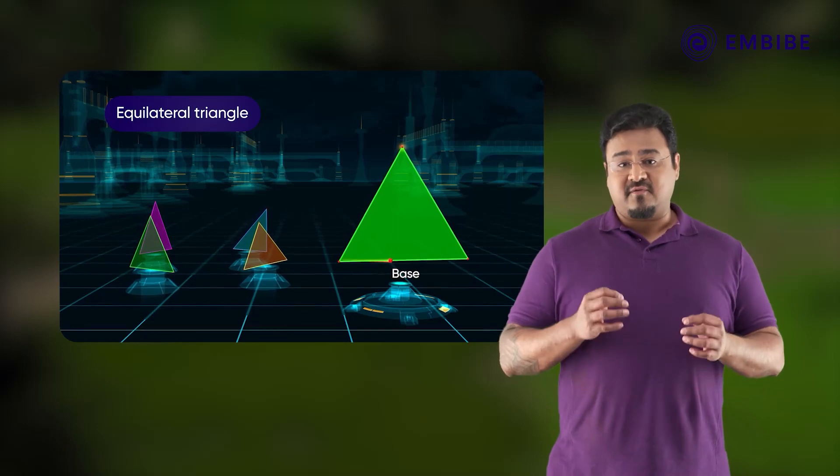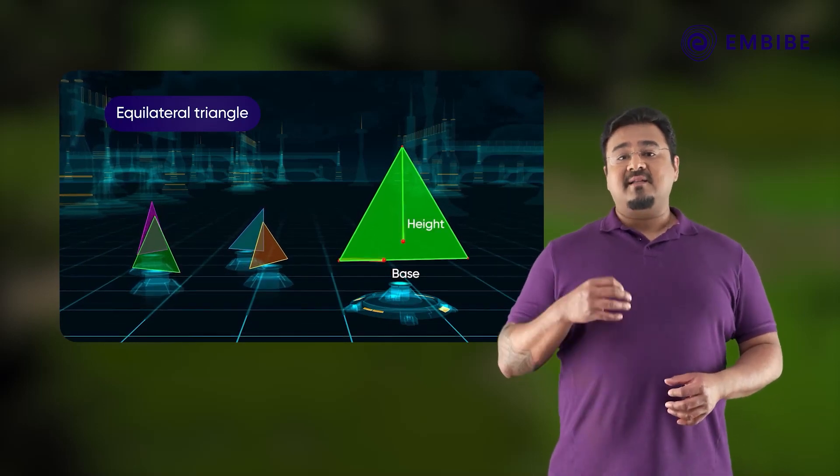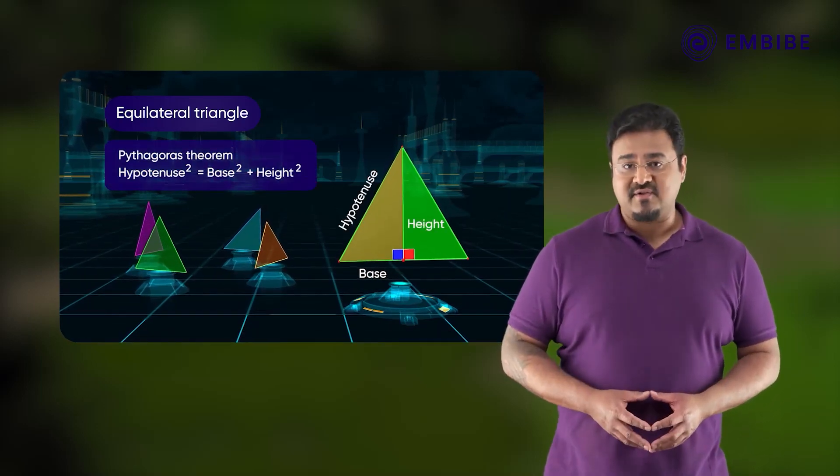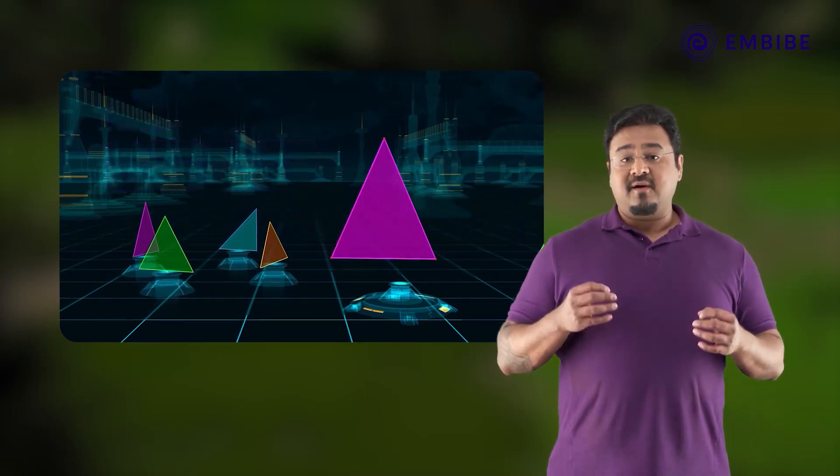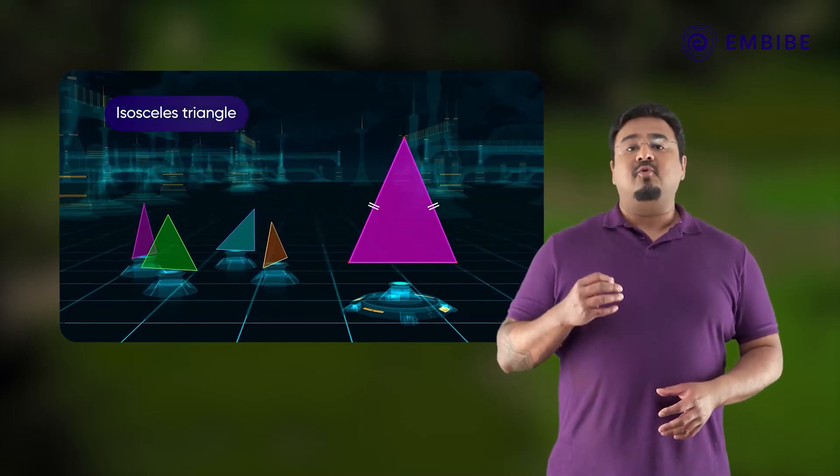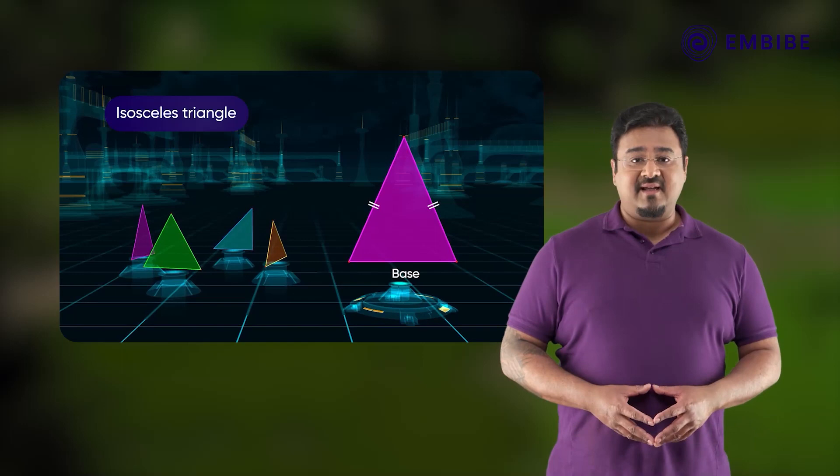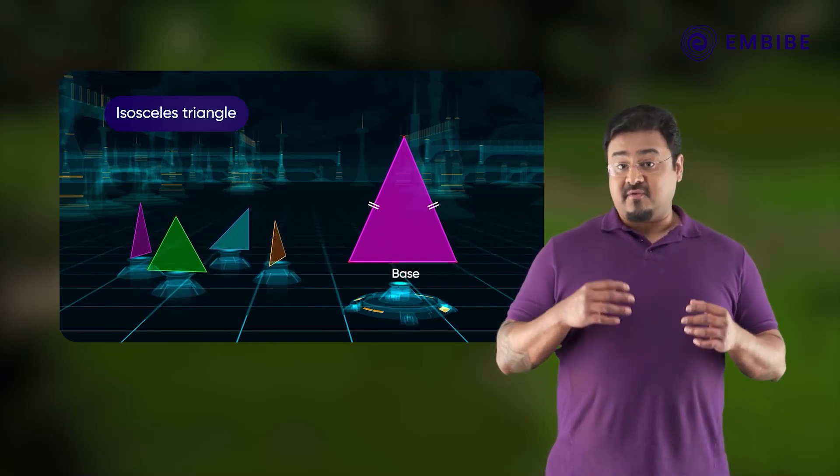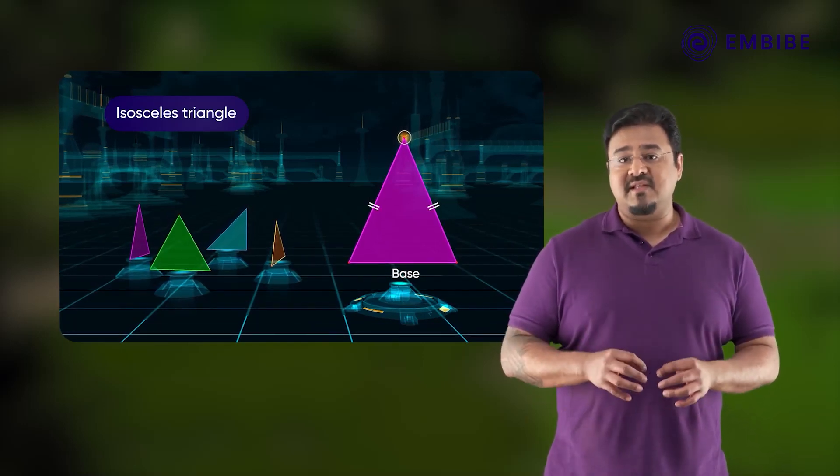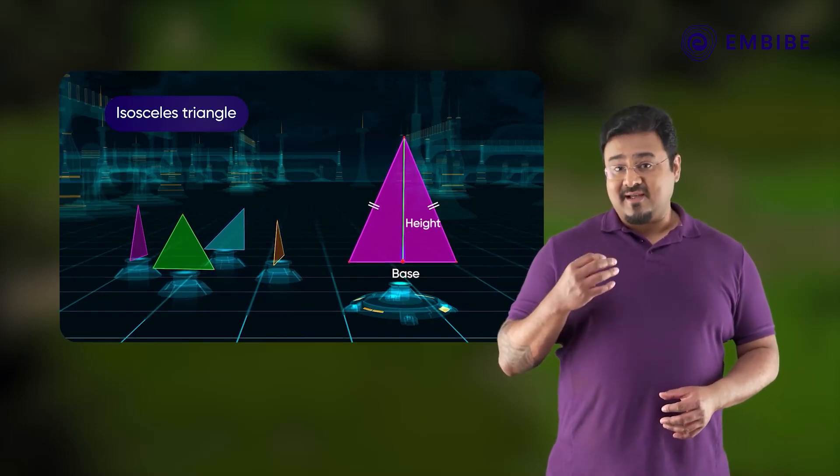In the case of an equilateral triangle, we can take any side as base and calculate the distance of the opposite vertex from this base to find height using Pythagoras theorem. For an isosceles triangle, we can take the unequal side as base and find the distance of the opposite vertex from this base to deduce the height using Pythagoras theorem.